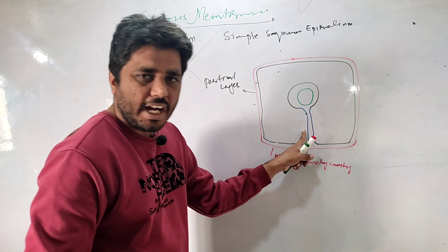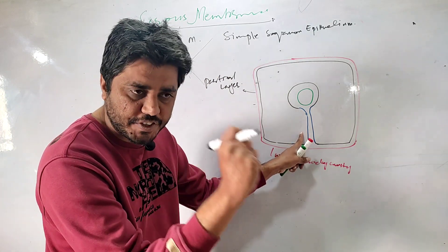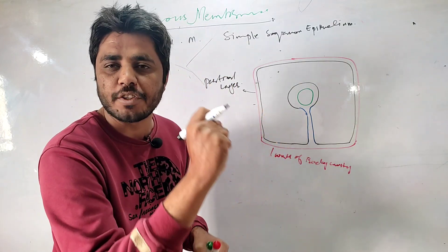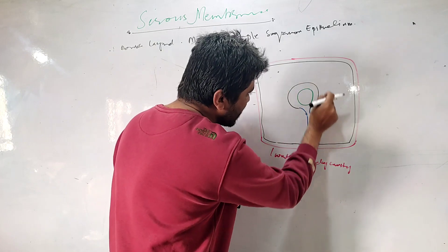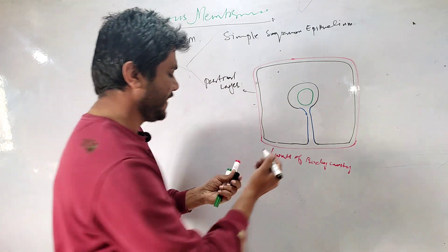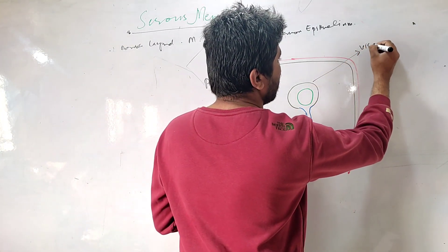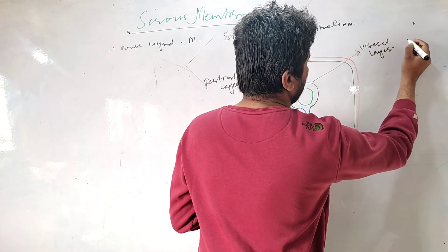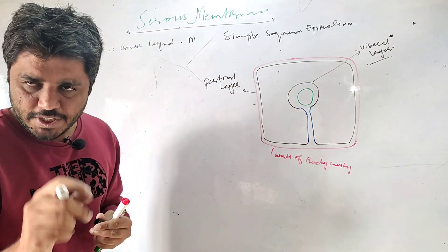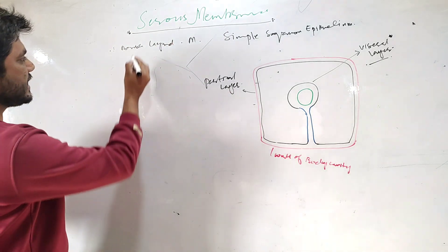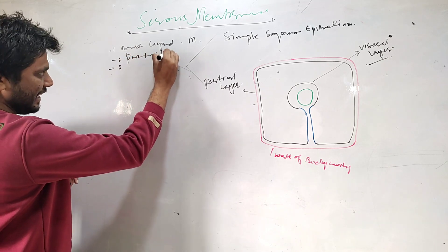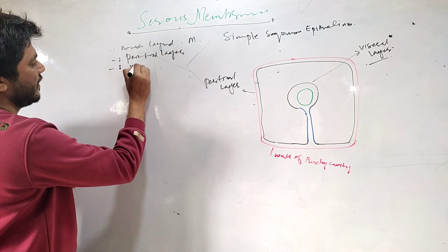This blue area is a fold of serous membrane, and the serous membrane which is covering the organ is known as the visceral layer. So your serous membrane is a double layer — one layer is called the parietal layer and the other one is called the visceral layer.